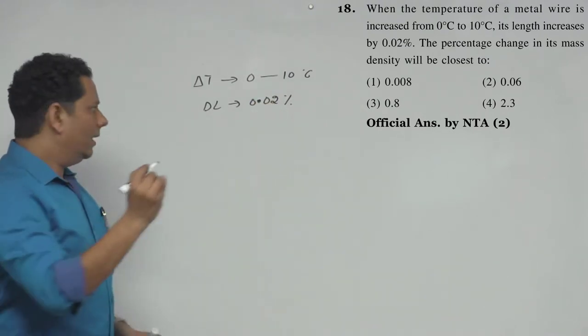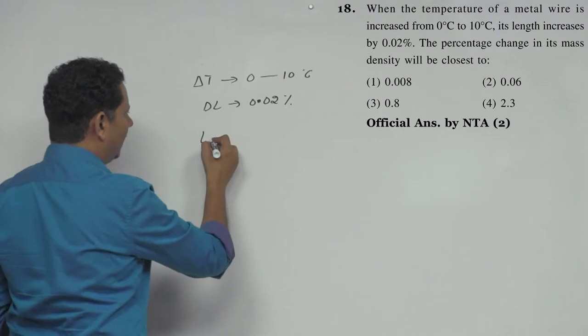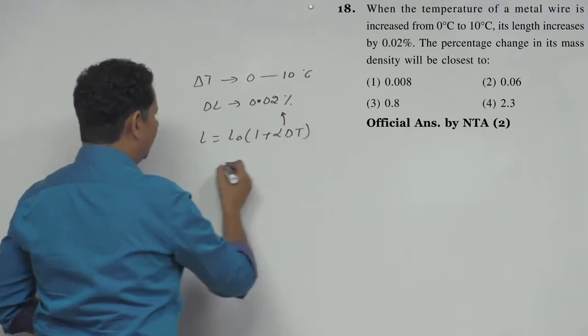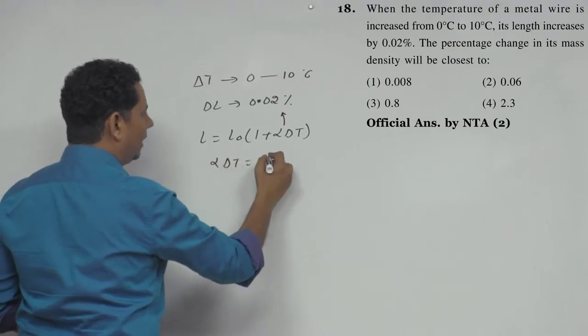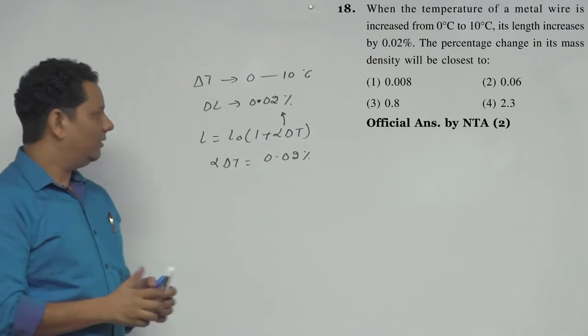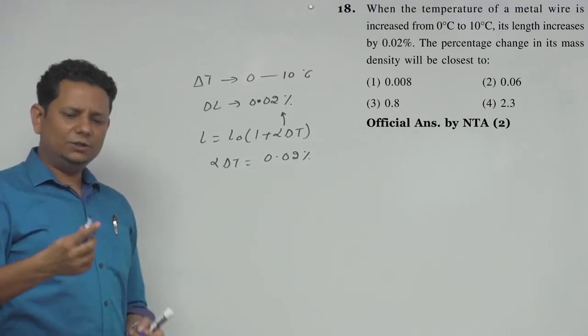Now we know from the expansion formula that L equals L naught times 1 plus alpha delta T. So alpha delta T, which came out to be 0.02%, represents the change in length.